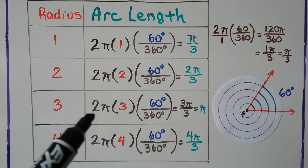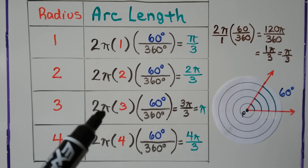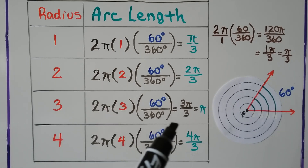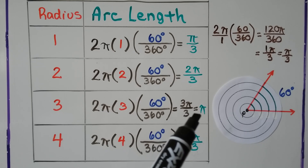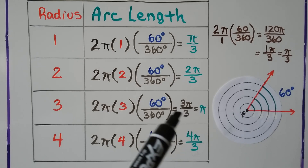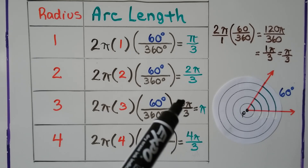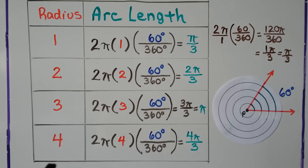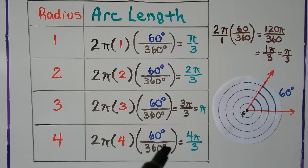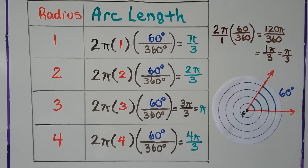For radius 3, we multiply by 3 and we're going to get just π — the 3 over 3 cancels out as a 1. For radius 4, we multiply by 4 and we get 4π/3.